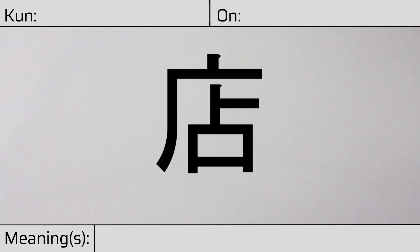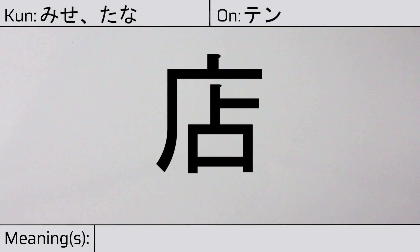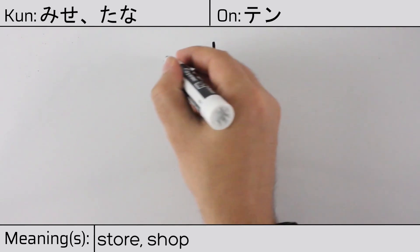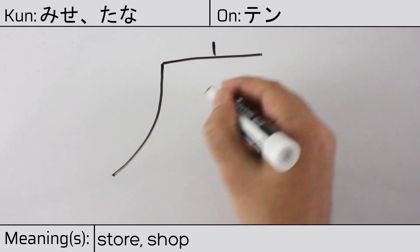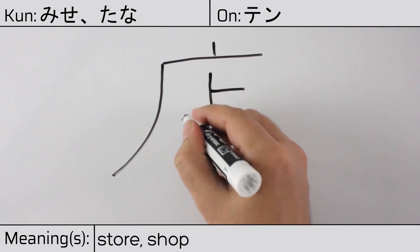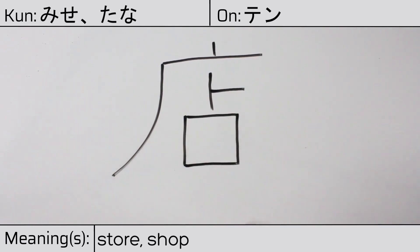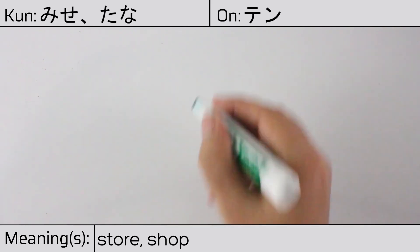Welcome to this lesson on Japanese kanji. Today, we'll be discussing this character. This kanji has kunyomi or Japanese readings of mise or tana, and it has an onyomi or Chinese reading of ten. This character has the meanings store or shop. Here is the stroke order.